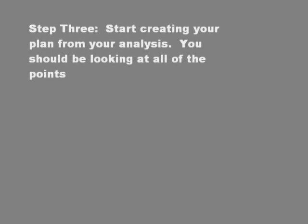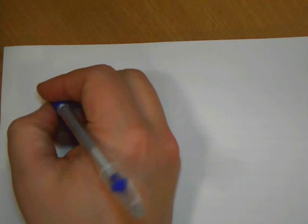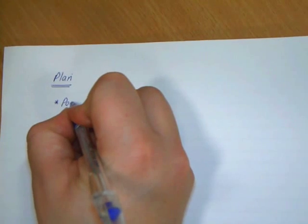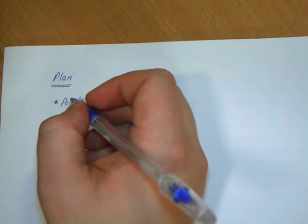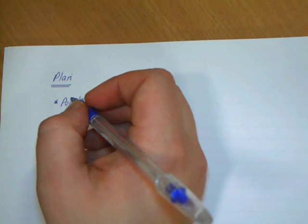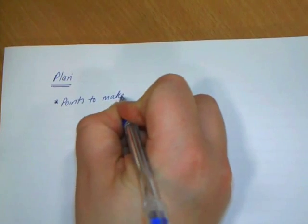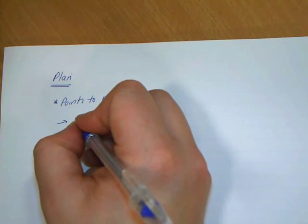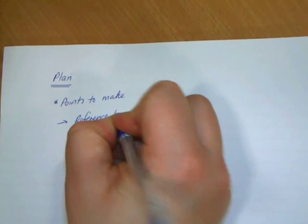Once you've done that, you've got to start actually creating your plan from this analysis. The key thing is to make sure that this plan is very short — just bullet points — because all you're going to do is use it as a reference as you're writing, so you don't forget to include anything. Realistically, in the time you have for a question, three or four points is all you're going to be able to fully develop. Five points is probably stretching it a little.